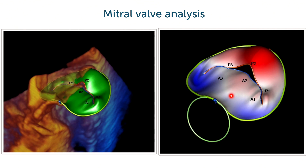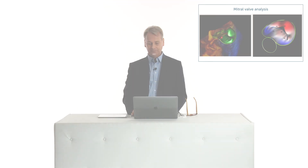Just another way of displaying this patient with a posterior prolapse shown in red and the remaining part of the leaflets in blue. This provides a very clear way of naming the structures, making it easy to understand these images and communicate them with the surgeon.